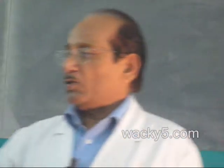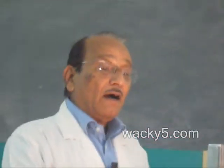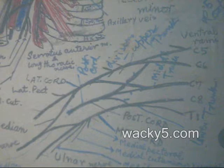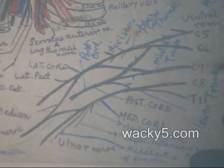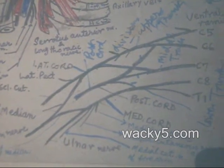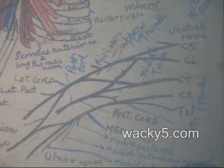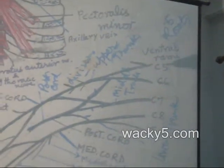Now we have considered the attachment, origin, and insertion. Now comes the nerve supply. For the nerve supply of this muscle I will restrict myself to some main points. This is the brachial plexus, which is formed by the ventral rami of the lower four cervical nerves — that is cervical 5, 6, 7, 8 — and the first thoracic. They form the brachial plexus.